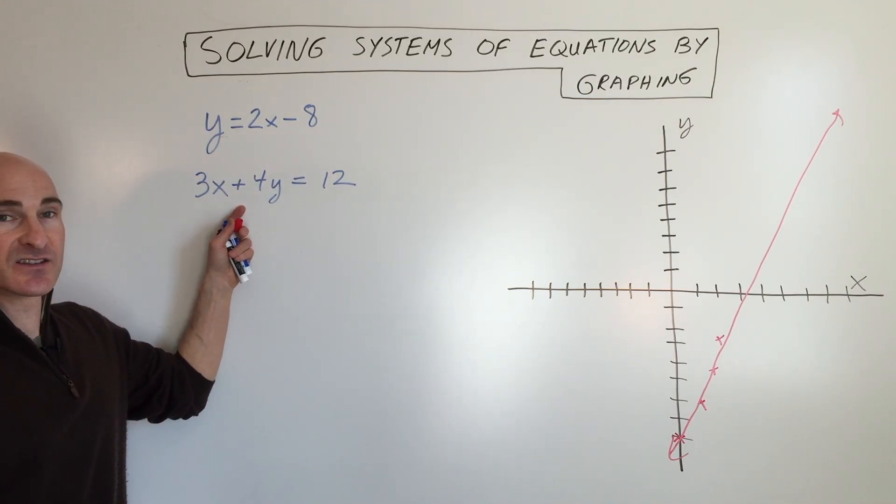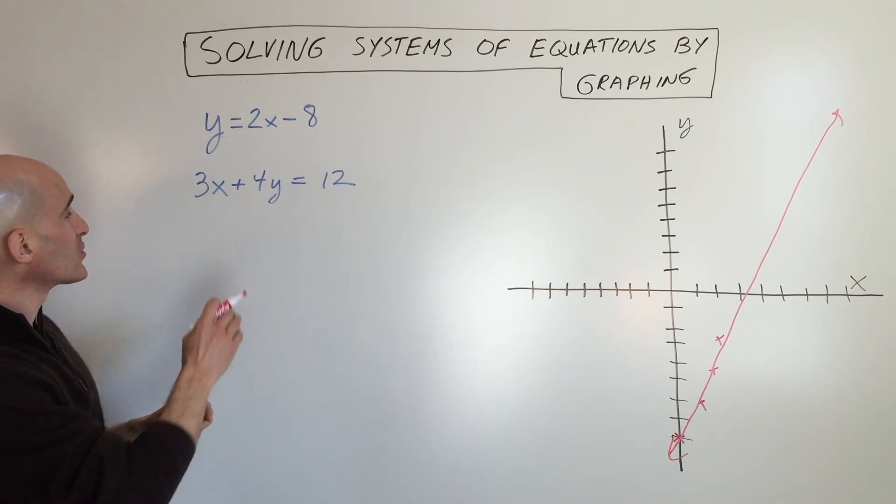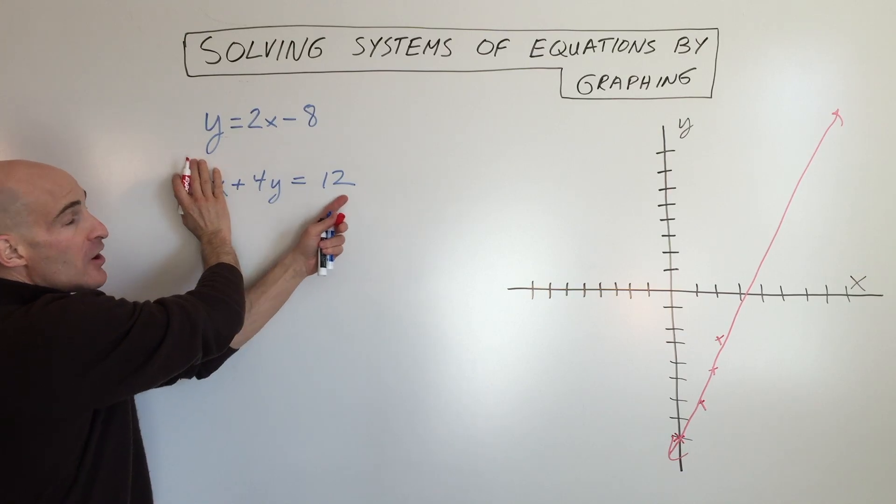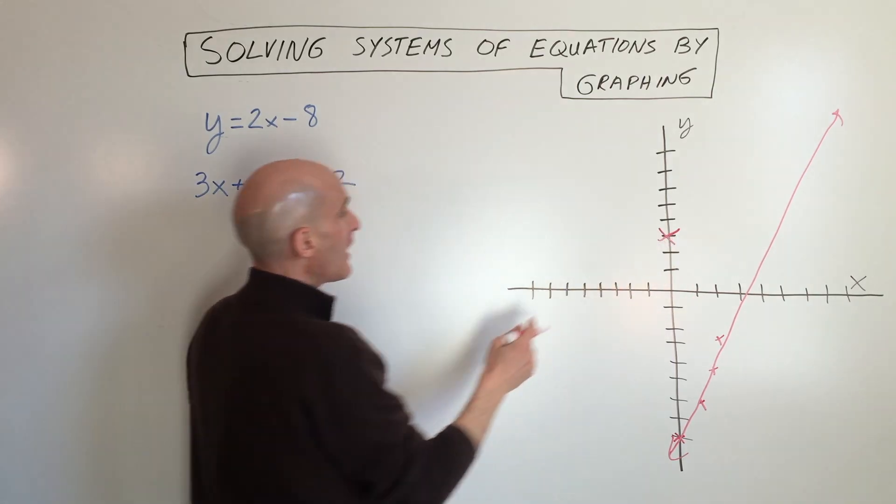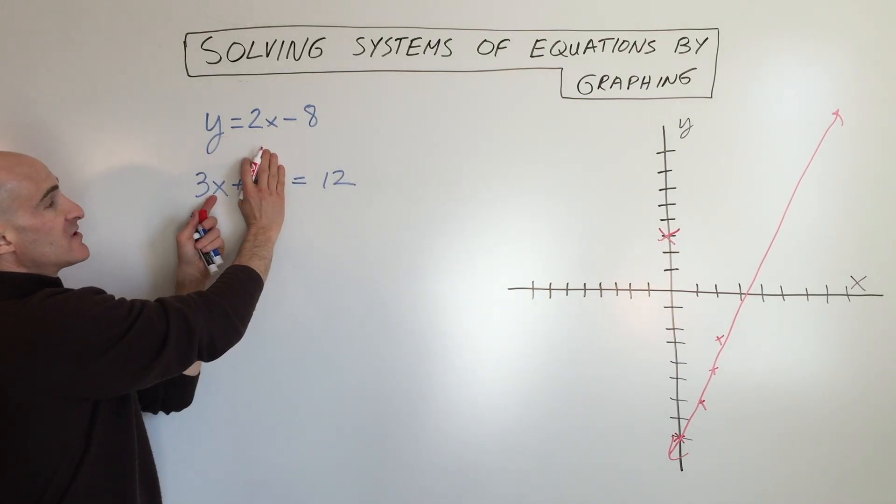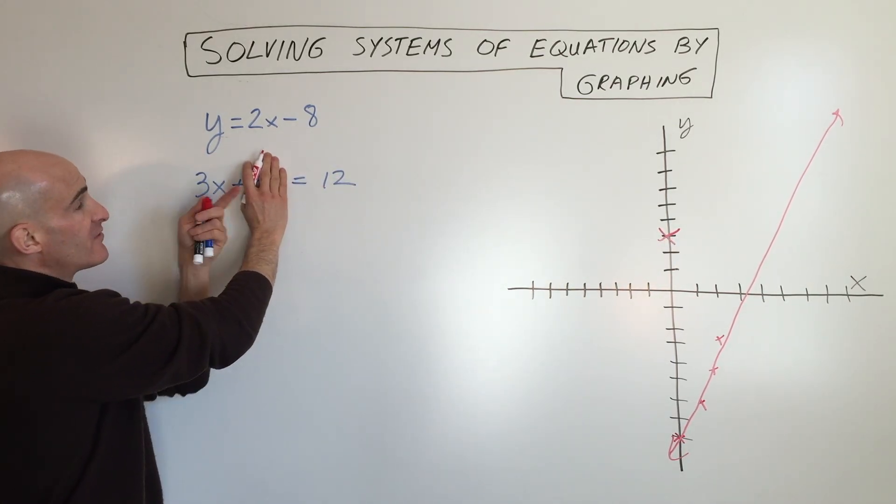The second line is in standard form, so what we're going to do here is set x to zero and solve for the y-intercept, which is y equals three. Then if we set y to zero, x equals four when we divide by three.